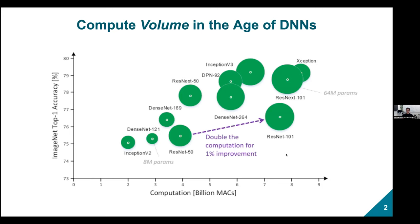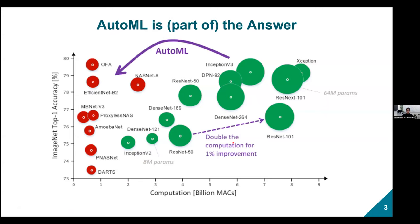We need to do computation in terms of billions of multiply-accumulate operations, and our compute resources aren't keeping up. Before deep neural networks, we used something called the histogram of gradient classifier, which was about 10 million MACs — roughly three orders of magnitude cheaper than any deep neural network. But the accuracy was stuck at 30 to 40 percent. So we need DNNs, but they're too large and too compute-heavy.